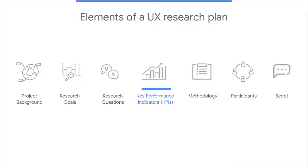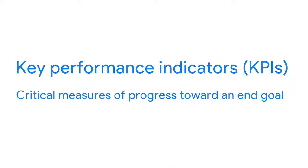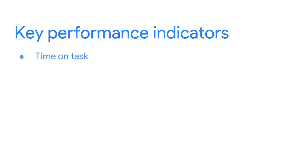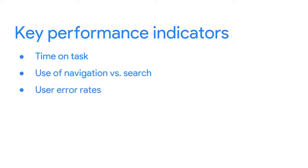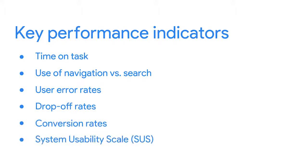Welcome to the world of key performance indicators — the fourth element in a research plan. When conducting research, you'll want to have a way to measure the effectiveness of your product or prototype, and for this we use KPIs — critical measures of progress toward an end goal. In this video, we'll check out six KPIs that can be useful in UX research studies: time on task, use of navigation versus search, user error rates, drop-off rates, conversion rates, and system usability scale, or SUS.